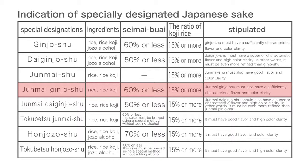Junmai-ginjoshu: the ingredients must be rice and rice koji. As with junmai-shu, jozo alcohol must not be used. It must have a polishing ratio of 60% or less, and the ratio of koji rice must be 15% or more. It must have a sufficiently characteristic flavor and color clarity.